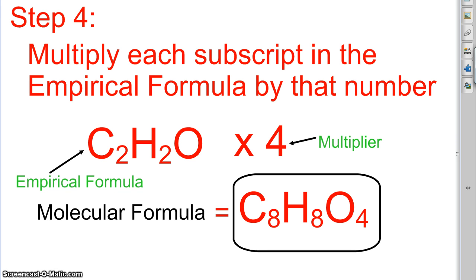And if you go back and add up 8 Cs, 8 Hs, and 4 Os, you will in fact get 168 grams per mole, just like we said we should. The end.